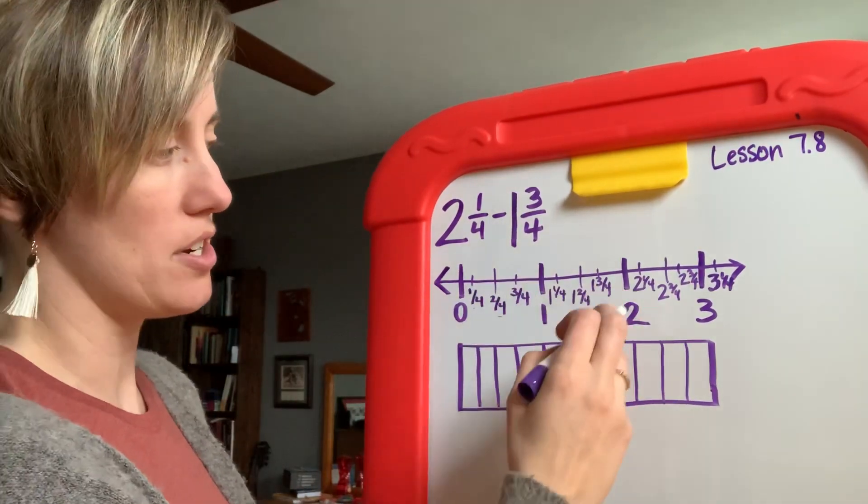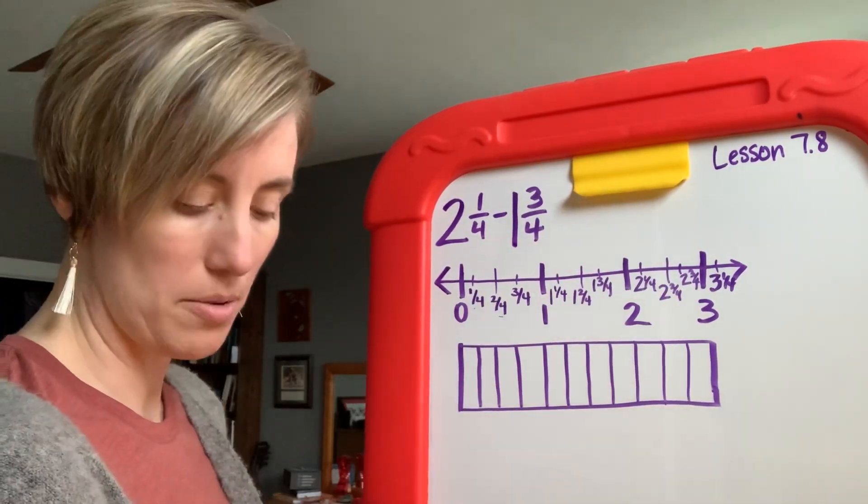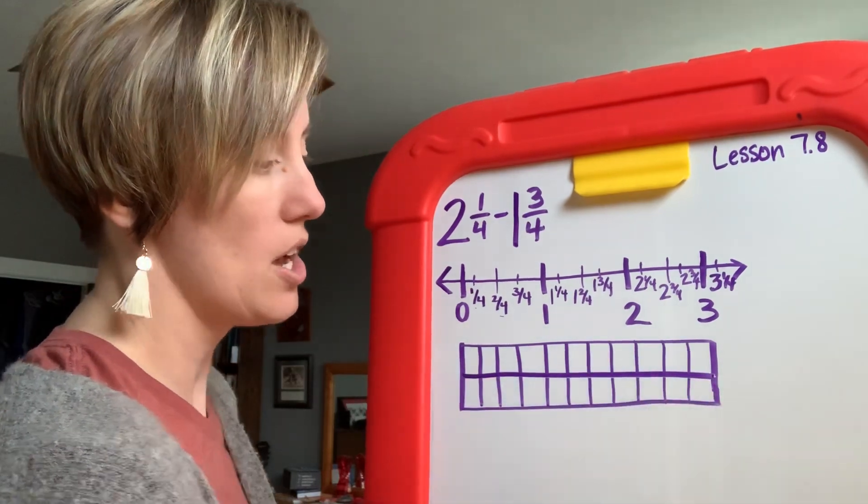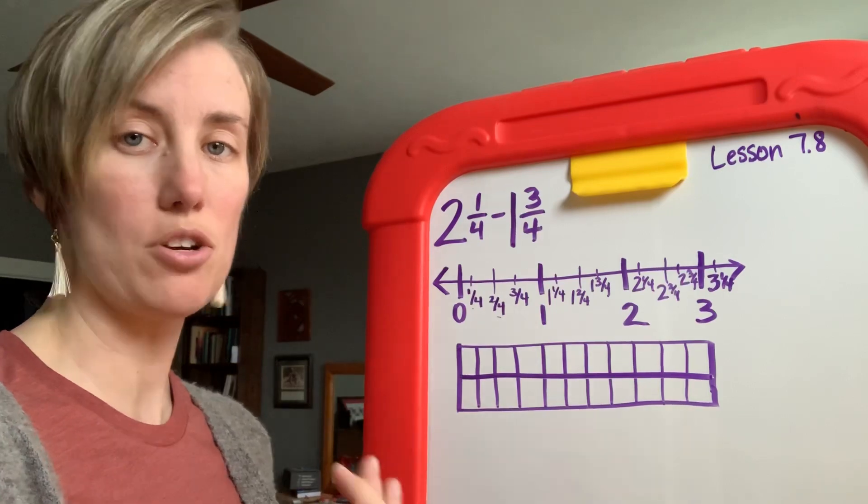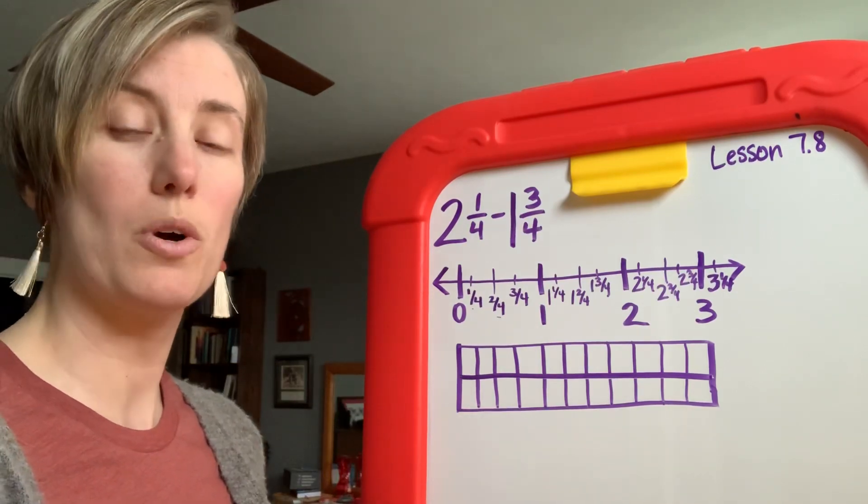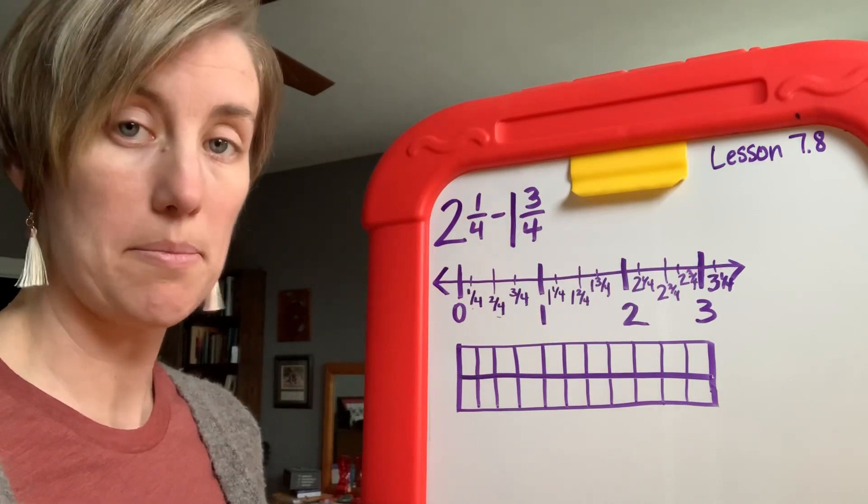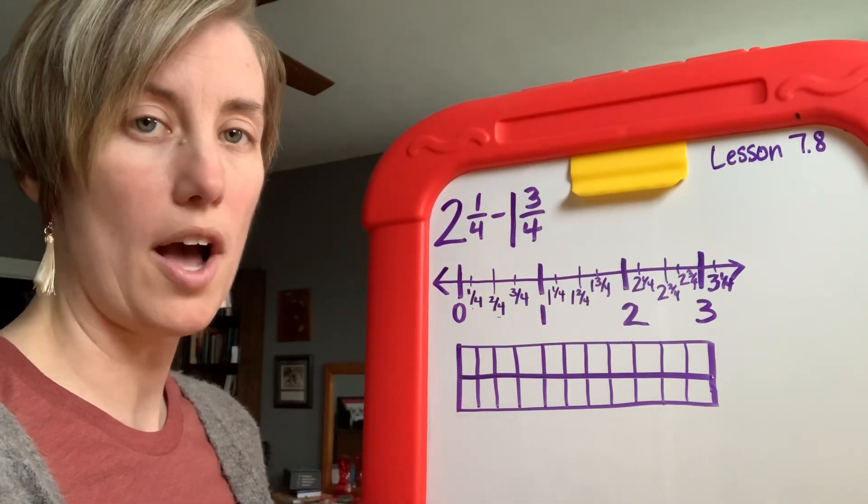It goes on down the number line to show how this would progress and so it shows you on page 429 two different models. What you can do is draw a model and on your model place your model on a number line. This is one way that you can solve the subtraction of mixed numbers using a model instead of doing any wild math problems.